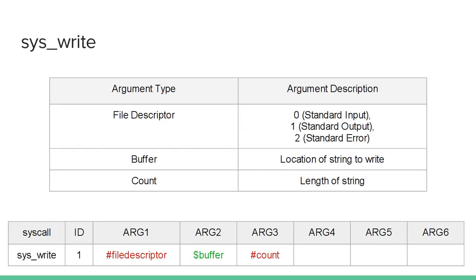Here's syswrite — this is what we use to write Hello World to the screen. The first argument is our file descriptor, the second argument is the buffer, and the third argument is the count. The file descriptor is 0, 1, or 2: 0 is your standard input, 1 is your standard output, 2 is your standard error. If you just want to write text to the screen, you're going to use standard output, which is 1. Your buffer is the memory address of the string of data that you want to write to the screen, and count is the length of that string — how many bytes are in the string.